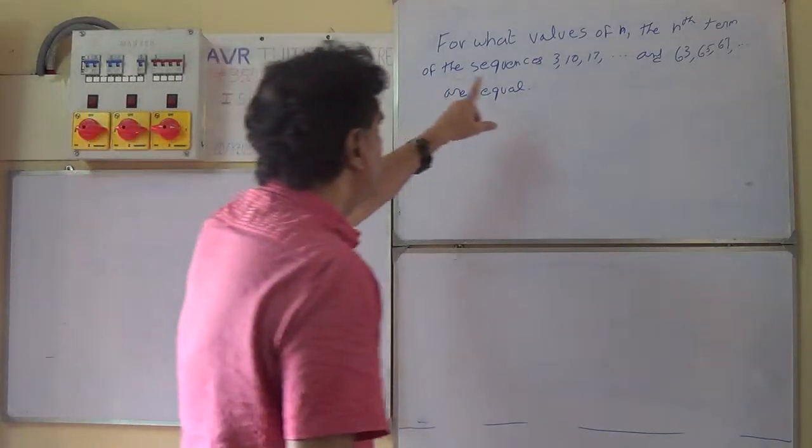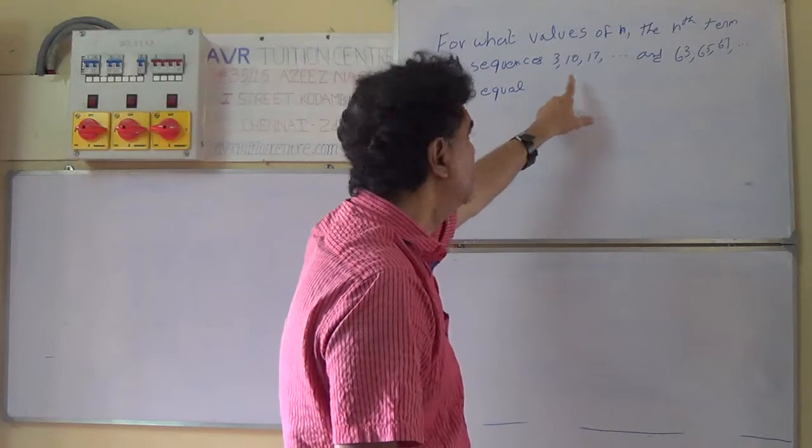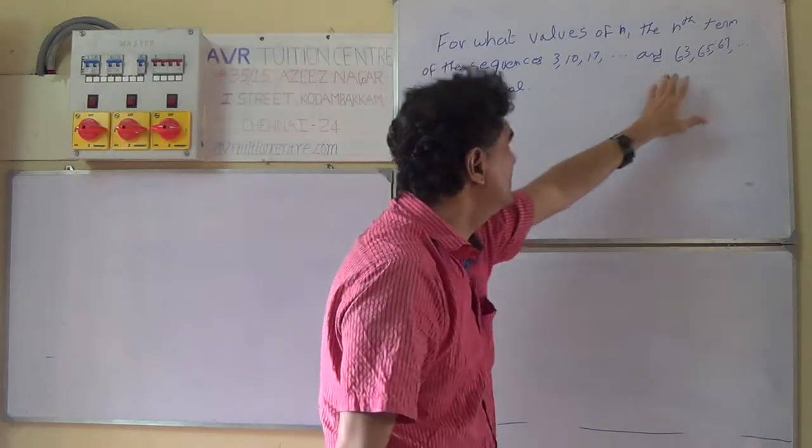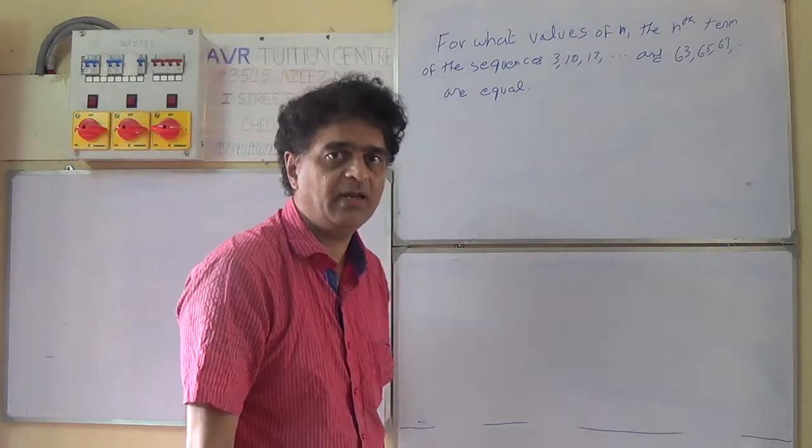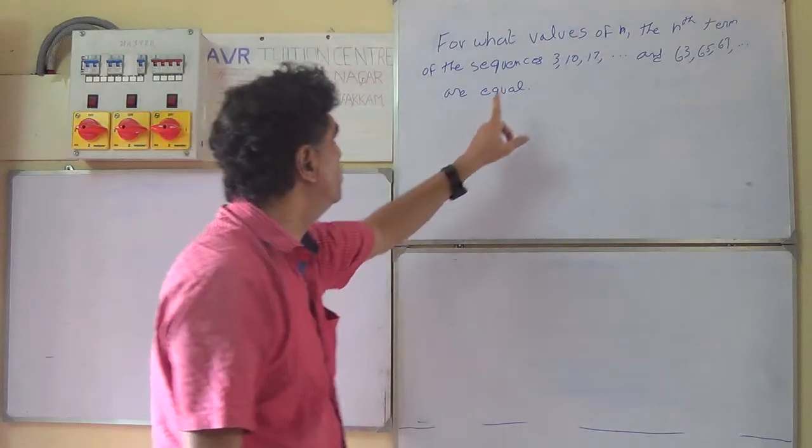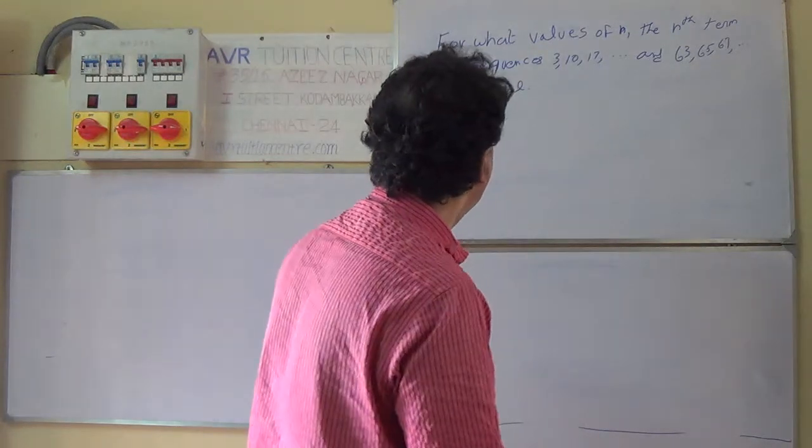For what values of n is the nth term of the sequence 3, 10, 17... equal to the nth term of another sequence? For what value of n are the nth terms of the two sequences equal?